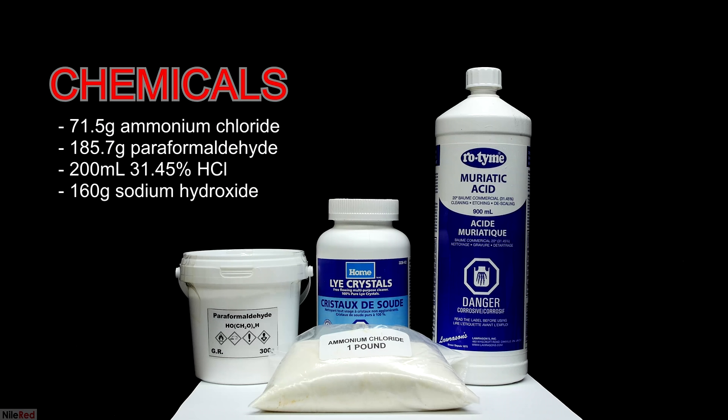In terms of chemicals, this is what I used. In the back I have paraformaldehyde, sodium hydroxide, and muriatic acid, and in the front I have ammonium chloride. The muriatic acid, also known as hydrochloric acid, was purchased from a local hardware store along with the sodium hydroxide. The ammonium chloride and the paraformaldehyde were purchased online from eBay. The procedure I'm using here was adapted from the site org-syn and I'll provide a link to it in the description.